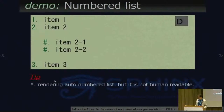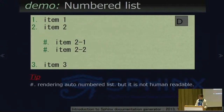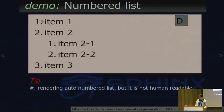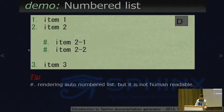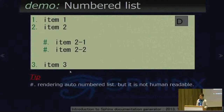The next is numbered lists — a simple tool. The sharp-dot syntax renders an auto-numbered list, but it is not human readable. reStructuredText is designed for human-readable syntax.